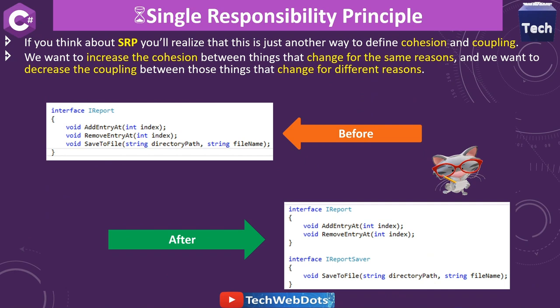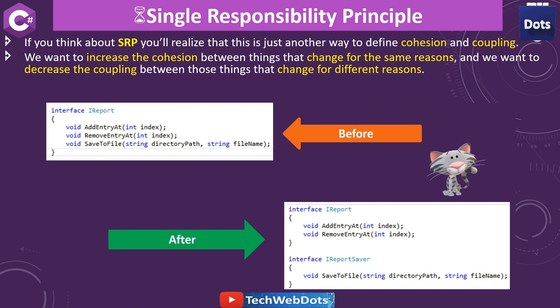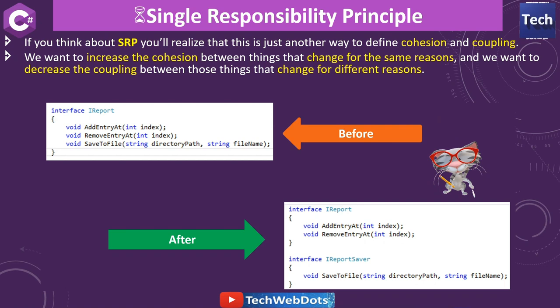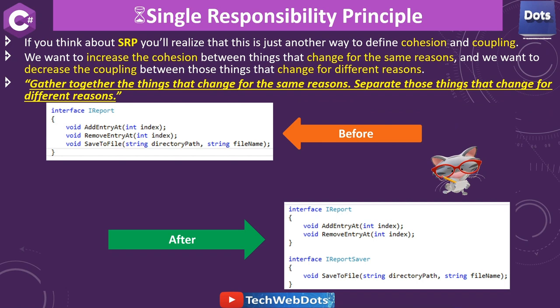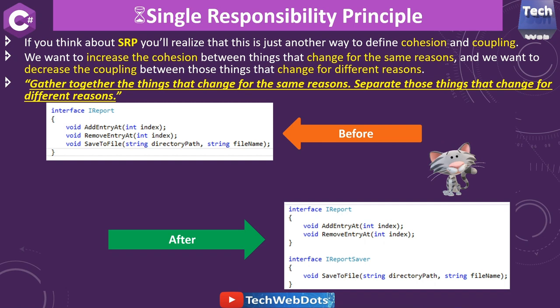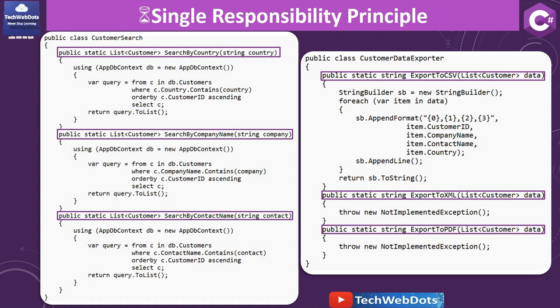If you think about Single Responsibility Principle, you will realize it is just another way to define cohesion and coupling. We want to increase cohesion between things that change for the same reason — meaning we want to combine them. And we want to decrease coupling — make things loosely coupled — between those things that change for different reasons. Another golden statement: gather together the things that change for the same reason, and separate those things that change for different reasons.